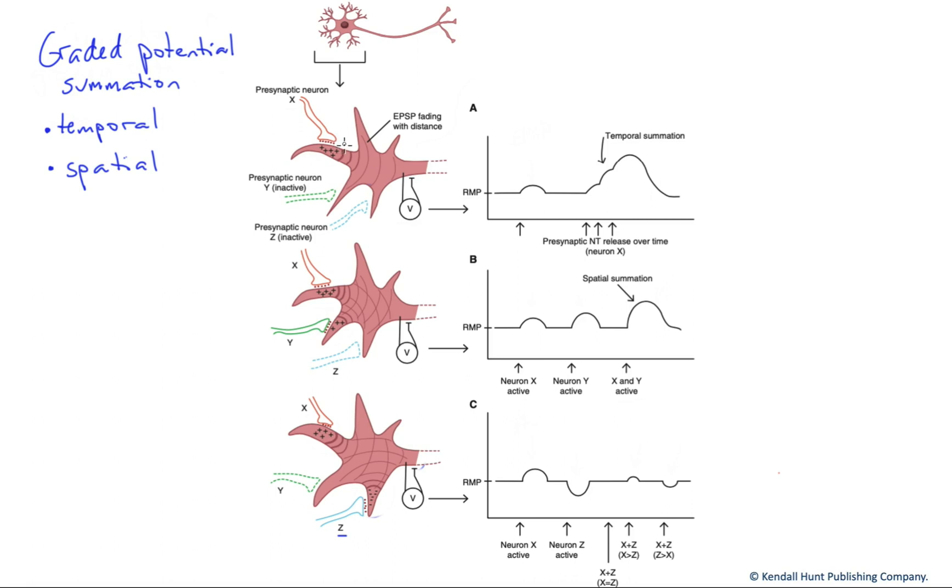Another way, we can open other types of channels that are opened by something other than neurotransmitter. For instance, mechanically gated channels or chemically gated channels. So this isn't the only scenario that graded potentials can be generated. But let's continue on and talk about how they can be additive.